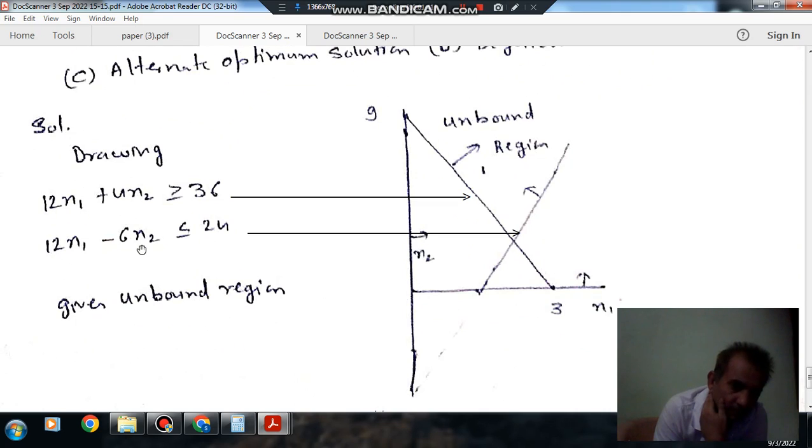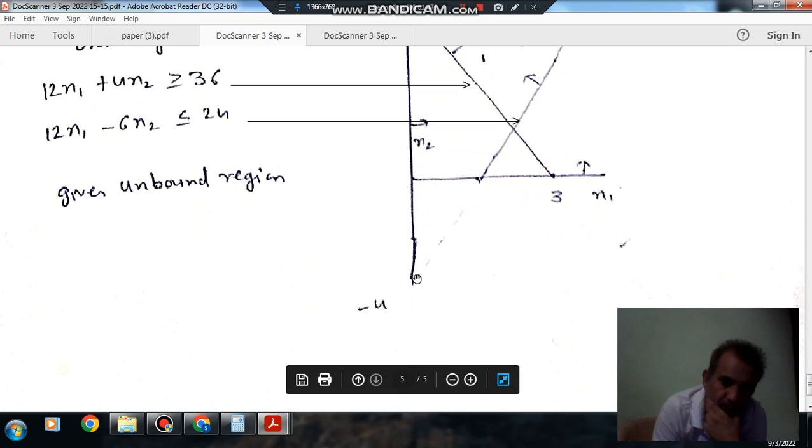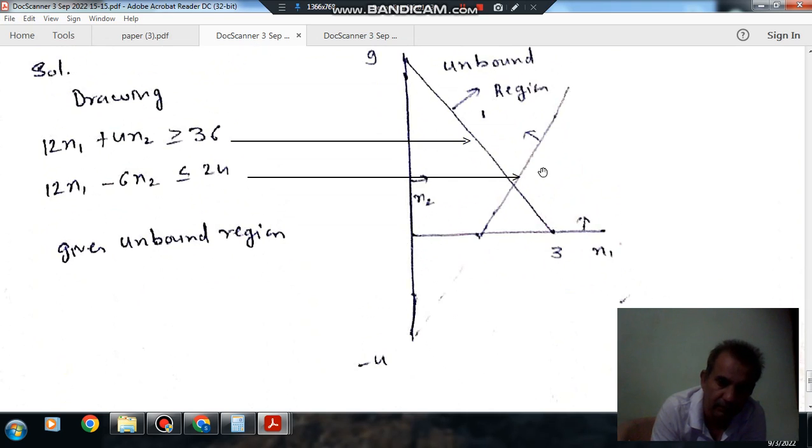If you put x1 as 0, then x2 will be minus 1. So drawing this line, this will be your 2. And x1, x2 are greater than 0. So we have drawn that part.